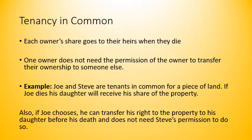When Joe dies, he passes his share on to whoever his heirs are. In this example it's his daughter, but it could be his wife, his son, or whoever he has in his will to receive his property. Also, if Joe wants to, he can transfer his right to the property to his daughter before he dies, and he doesn't need Steve's permission to do that.